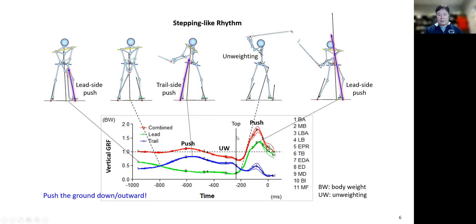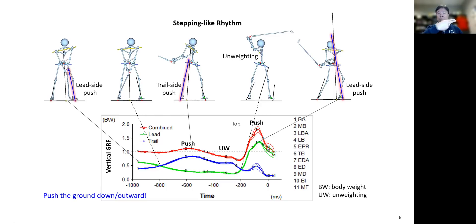As long as you have a good stepping-like push, you will automatically move the center pressure properly. Particularly at the top of the backswing, using the horizontal push, you will be able to generate a large horizontal force component. That's why at the top the force arrow shows a good inclination — the horizontal component comes from good horizontal interaction with the ground by using outward pushes.